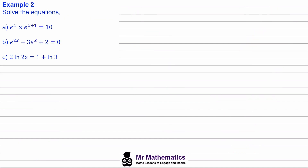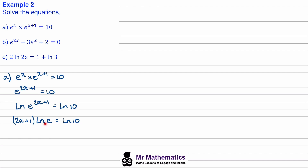We're going to apply the same rules in questions A, B, and C — perhaps you want to try these questions yourself and pause the video. For part A, we can simplify the left-hand side because we have the same base of e in both terms, so we can add these two powers together. This gives us e to the 2x plus 1 equals 10. Now we take the natural log of both sides and use the power rule of logs to bring this down in front. We know the natural log of e cancels to make 1, so we take away the 1 and divide both sides by 2, giving us the natural log of 10 minus 1, over 2.